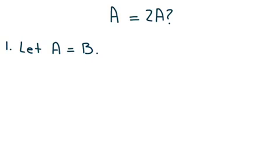Step one, let A equal B. Next, multiply both sides of this equation by A so that A squared equals AB.